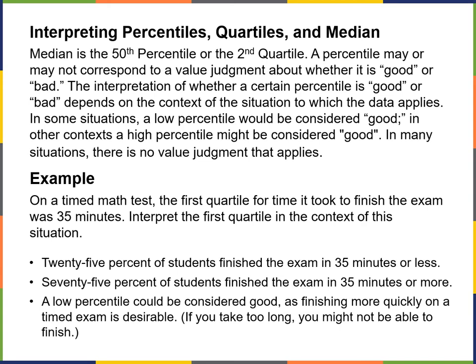Here's an example. If we have a timed math test, the first quartile for time to finish the exam was 35 minutes. That's the first 25% of people — they took up to 35 minutes. Interpreting the first quartile in context: 25% of students finished the exam in 35 minutes or less, while 75% of students finished in 35 minutes or more. So there's a potential time difference between people who finished quickly and those who did not.